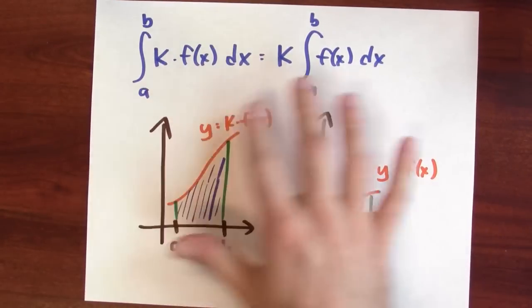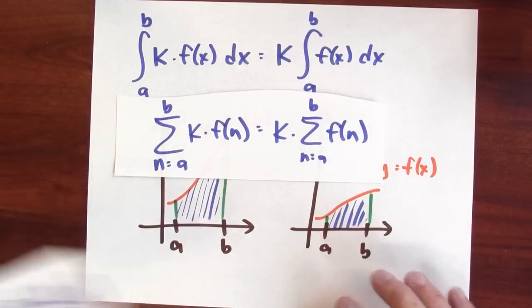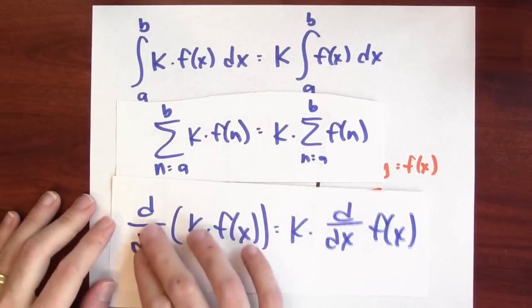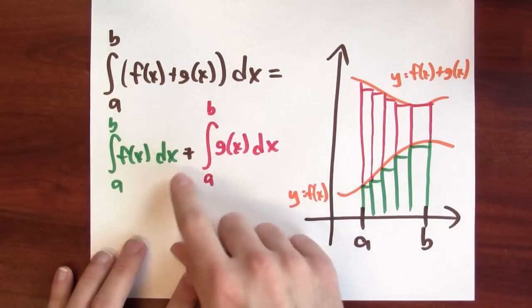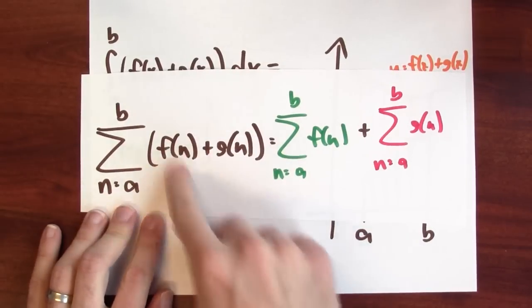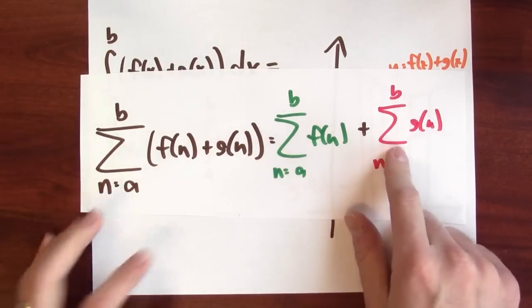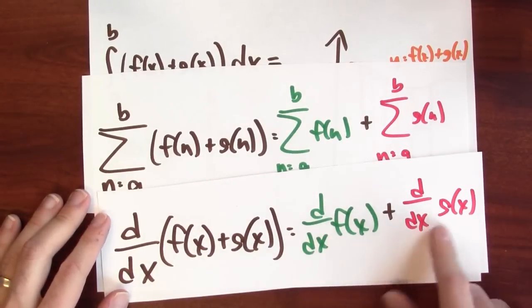I've got the constant multiple rule for integrals, a constant multiple rule for sums, and a constant multiple rule for derivatives. The derivative of a constant times some function is that constant times the derivative of the function. Same kind of deal for sums. I've got this sum of the integrals is the integral of the sum, this sum of a sum is the sum of the sums, and the derivative of a sum is the sum of derivatives.